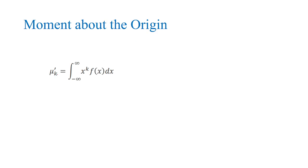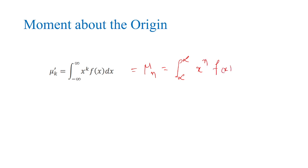We can denote it with μₙ, or mₙ, or μₖ — all are equivalent notations. This is for continuous random variable — moment about the origin is the integral from minus infinite to plus infinite of x power n into f(x) dx.